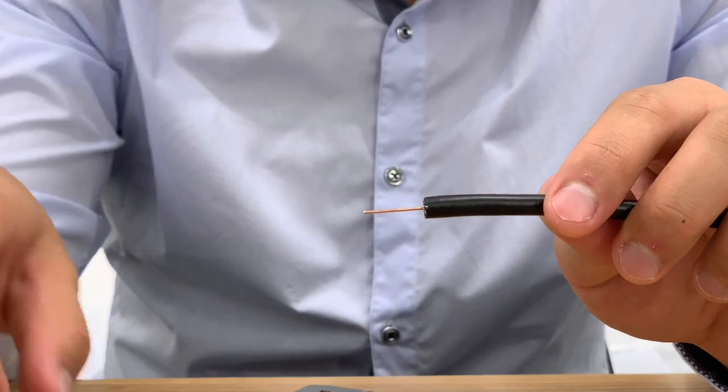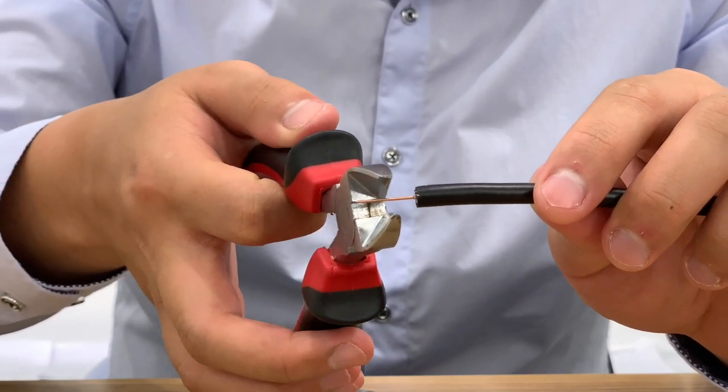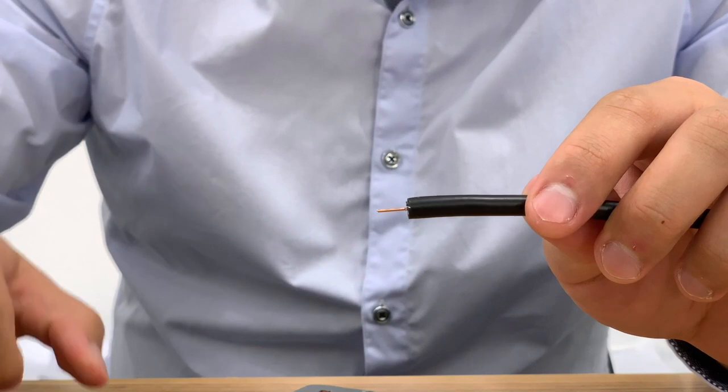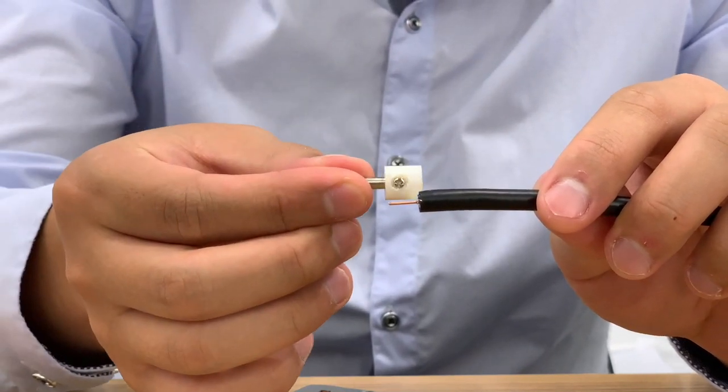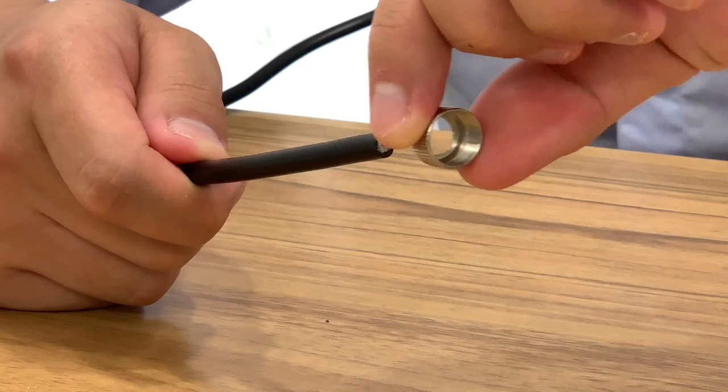Next measure and trim the core conductor so it does not extend past the center connector. Now slide the collar onto the cable.